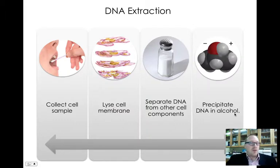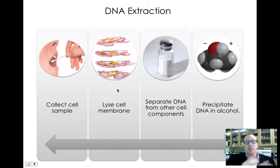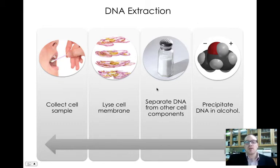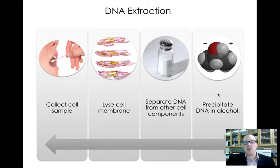When you extract DNA, there are four main steps. First, collect cell samples — you'll collect your own cells from the inside of your cheeks. Then you have to get at the DNA by breaking apart the cell membranes and nuclear membrane, a process called lysis. Next, separate the DNA from other cellular components by introducing the solution to a very high salt concentration. Finally, precipitate the DNA — since DNA does not dissolve well in alcohol, adding cold alcohol causes the DNA to precipitate out in a cloudy form.